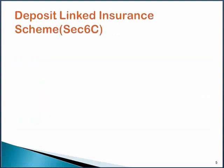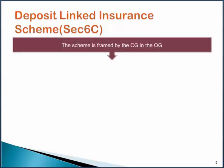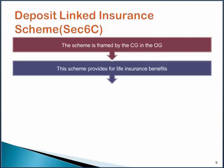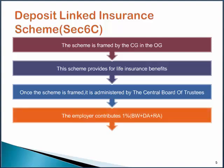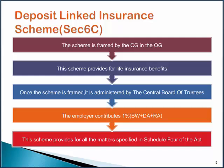Another theoretical question is on the Deposit Linked Insurance Scheme as per Section 6C. The scheme should be framed by the Central Government in the Official Gazette. The scheme will provide for life insurance benefits. Once the scheme is framed, a fund would be set up and administered by the Central Board of Trustees. The employer would contribute 1% of Basic Wages plus Dearness Allowance plus Retaining Allowance. This scheme should provide for all the matters specified in Schedule 4 of the Act.